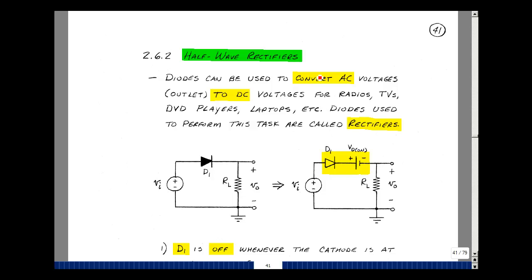This lesson deals with half-wave and full-wave rectifiers. You can find these notes in the ECE 302 eBook in Chapter 2 starting on page 41. Diodes can be used to convert AC voltages to DC voltages. We need this for electronic devices like radios, TVs, DVD players, laptops, really anything that's electronic for the most part needs a DC voltage. Diodes used to perform this task are called rectifiers.